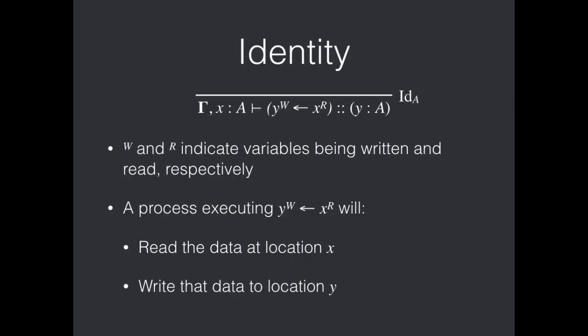So now we move to look at identity and here we introduce a bit of notation that's convenient throughout. We have these superscripts W and R to indicate when a variable is being written to or read from respectively. So we can see here that Y is being written to and X is being read from. And accordingly, this process will read the data at location X and then write that data to location Y. So it very much is a copy from X to Y.